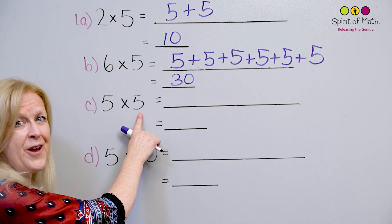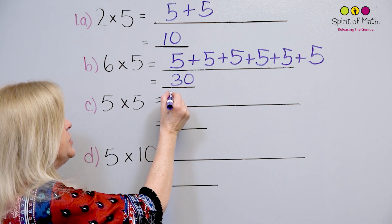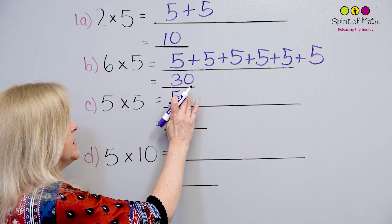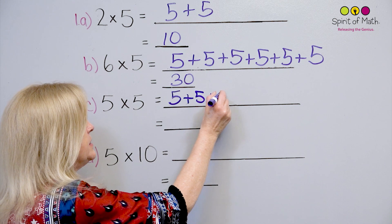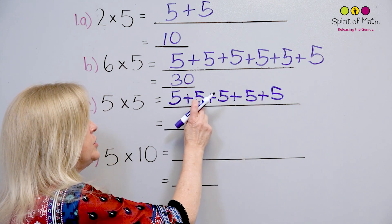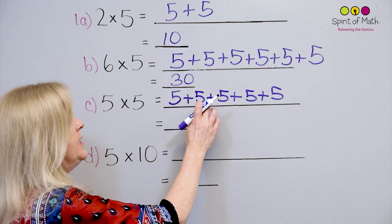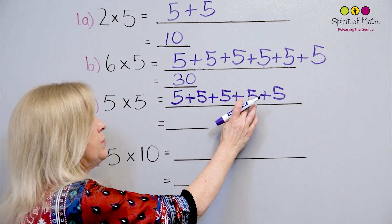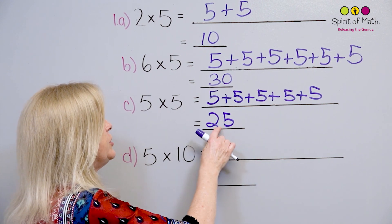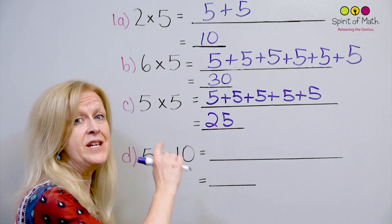Next one says 5 groups of 5. This is kind of a fun one because it's the same number. So you write down 5 plus 5 plus 5 plus 5 plus 5. Double check: 1, 2, 3, 4, 5. And that is 5, 10, 15, 20, 25. This is a good one to remember — 5 times 5 is 25.